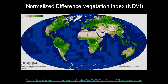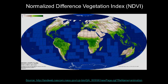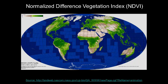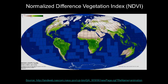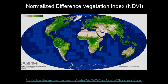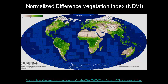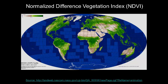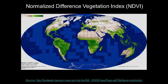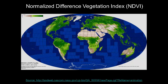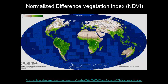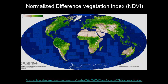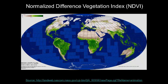This animation shows monthly NDVI values from 2000 to present, derived from MODIS data. Dark green areas show where there was a lot of green leaf growth. Light greens show where there was some green leaf growth, and tan areas show little or no growth at all. As you can see, there is a lot of spatial and temporal variability in the NDVI values globally.